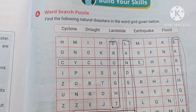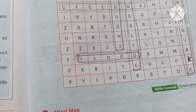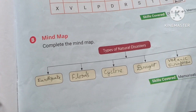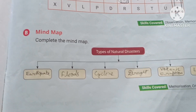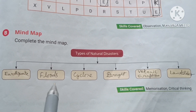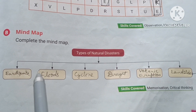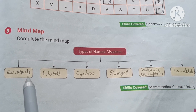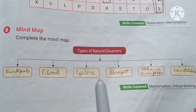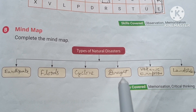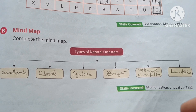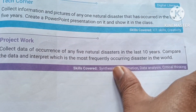The next question is the mind map given below. Complete the mind map: types of natural disasters. First given here are earthquake, floods, cyclone, drought, volcanic eruption, and landslides.